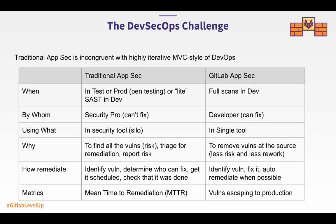These slides show the differences between traditional application security and the way GitLab does application security. It's all about shifting left — removing vulnerabilities early, by the person who can actually do the remediation, which is the developer, not the security person.